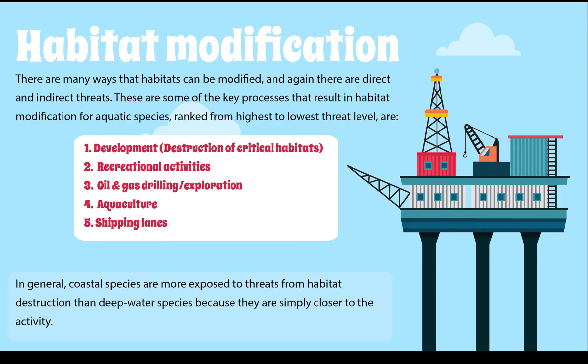Habitat modification presents many threats — both direct and indirect. Key processes that result in habitat modification for aquatic species, ranked from highest to lowest threat level, include: development and destruction of critical habitats, recreational activities, oil and gas drilling or exploration, aquaculture, and shipping lanes. Coastal species are generally more exposed to habitat destruction than deep-water species because they are simply closer to human activity.